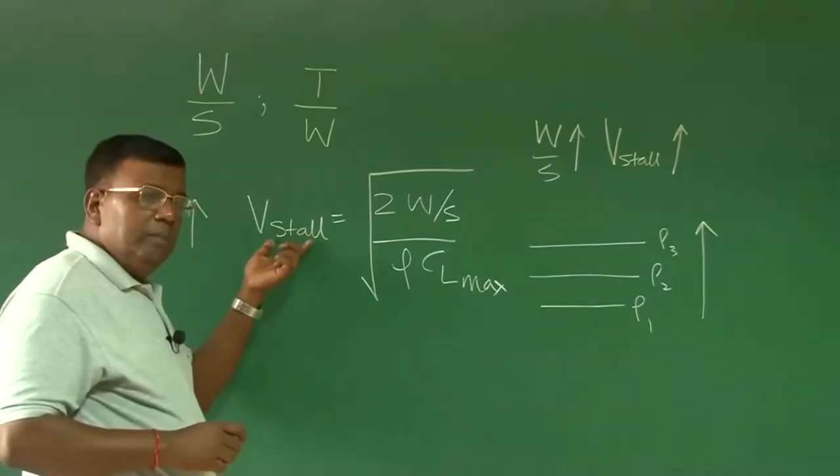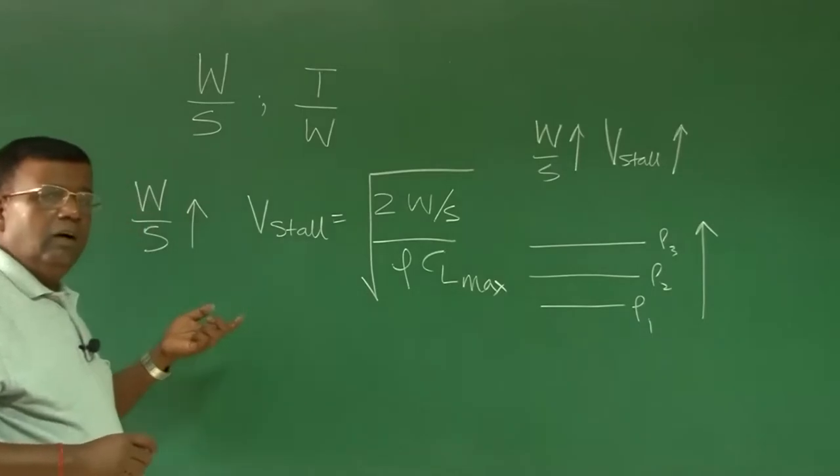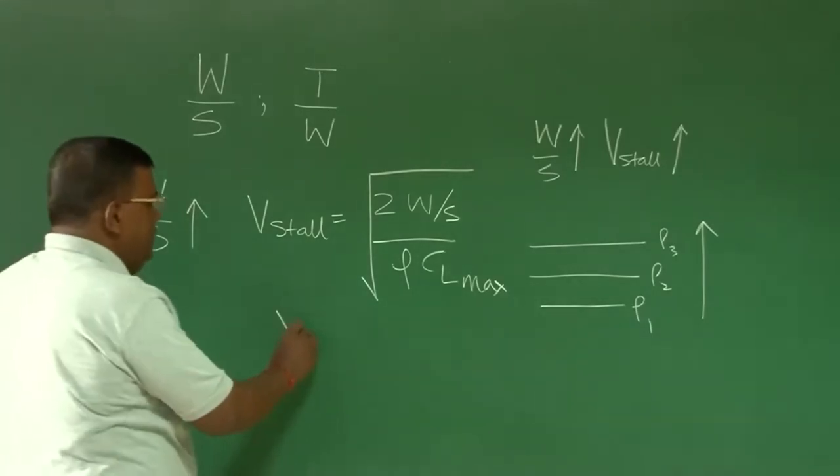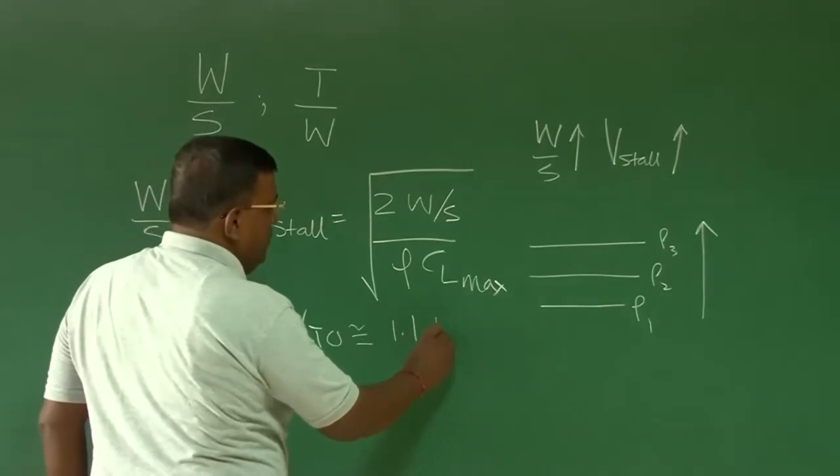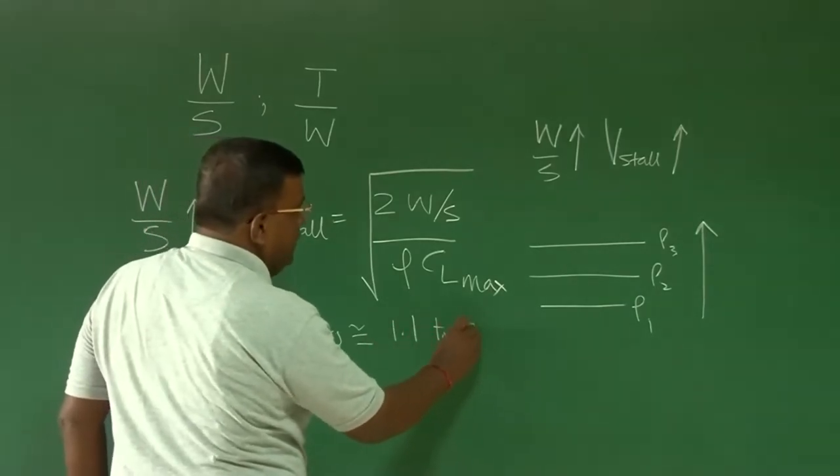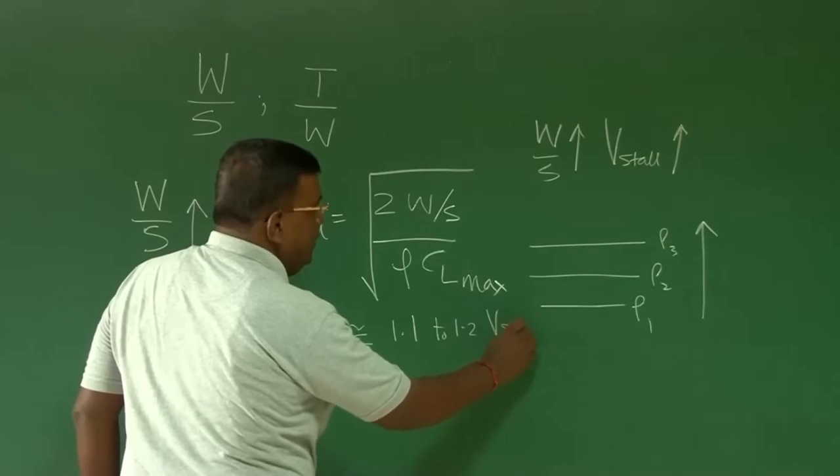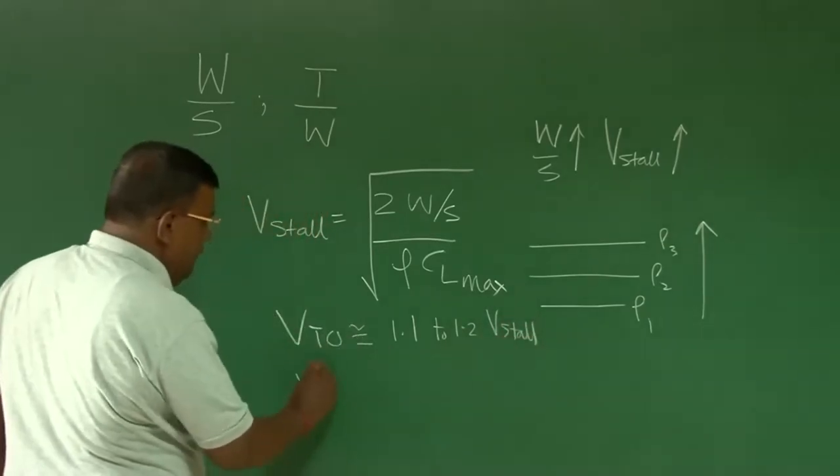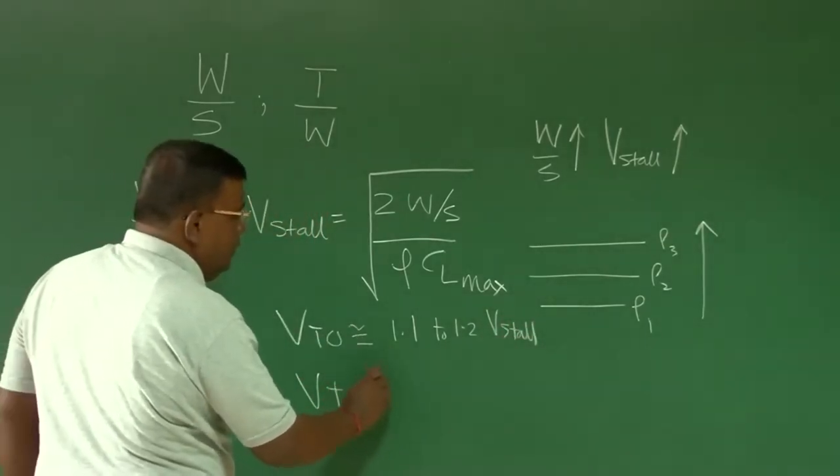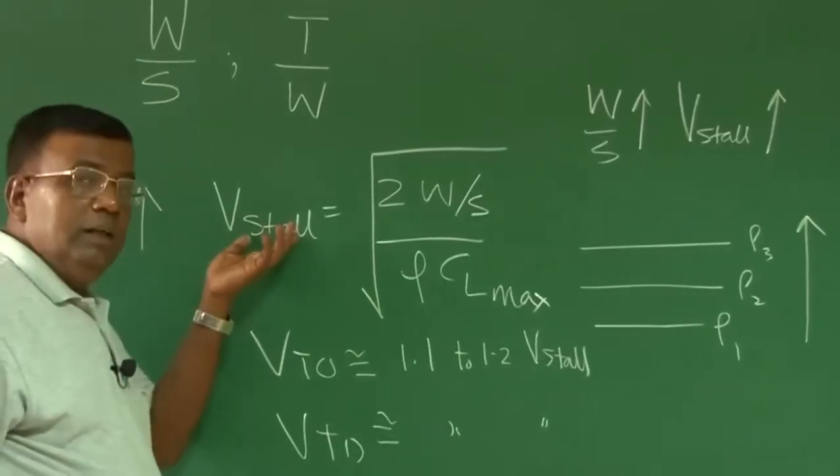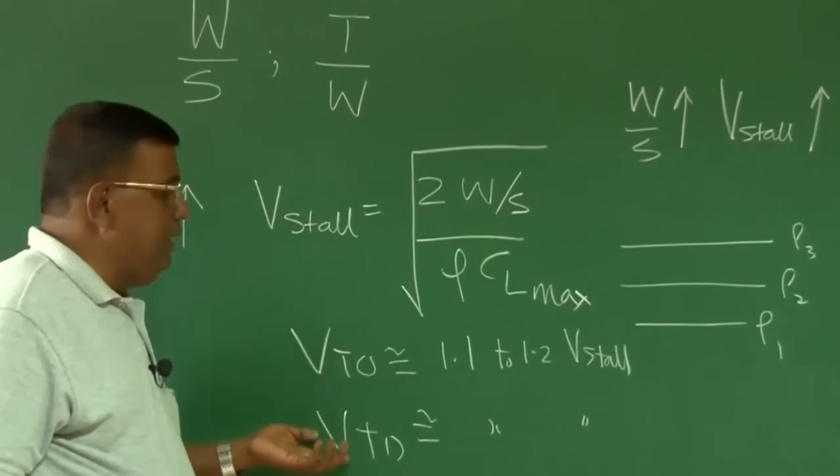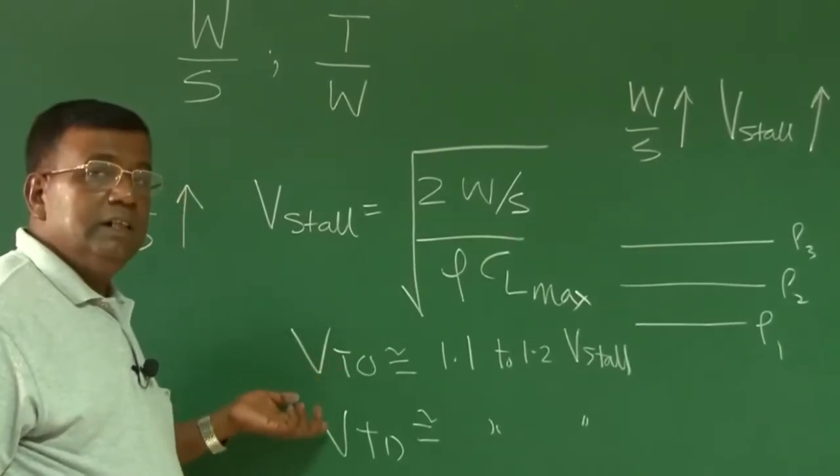This is the minimum speed in some sense and when I talk about V takeoff, V takeoff or V landing, we try to design such that between 1.1 to 1.2 times V stall. Similarly, V touchdown is also of this same order. Therefore, as V stall increases, V takeoff and V touchdown also will change, will increase.